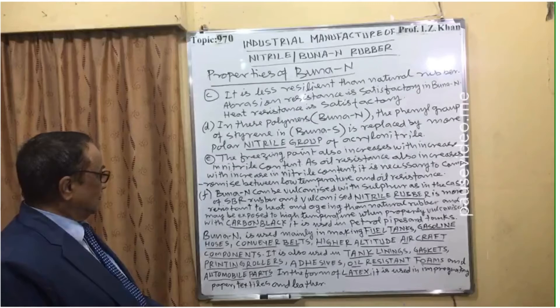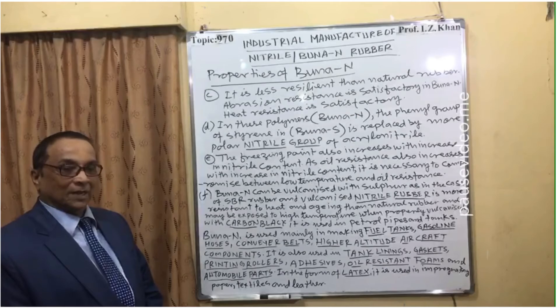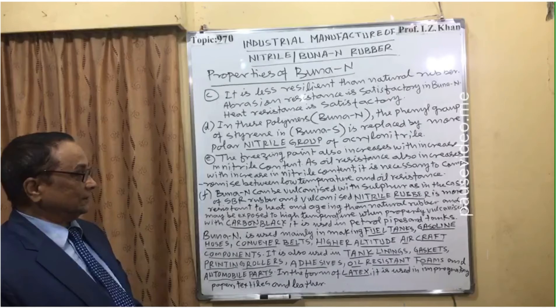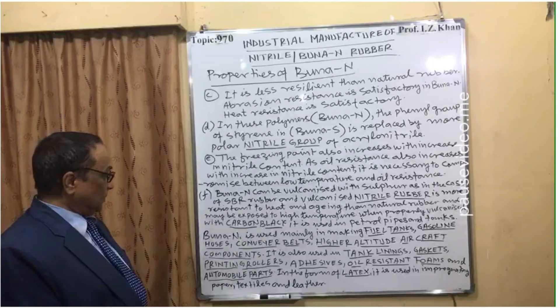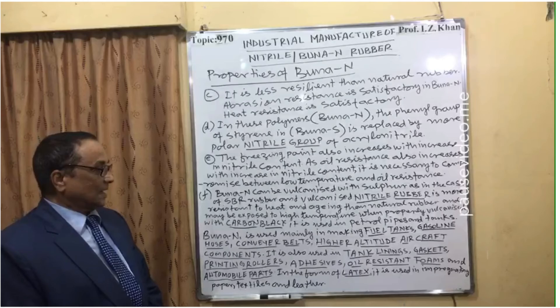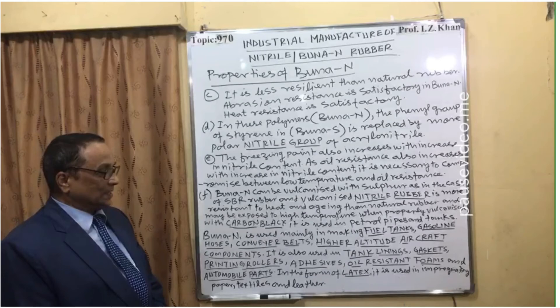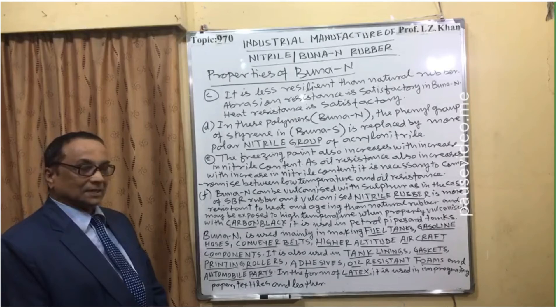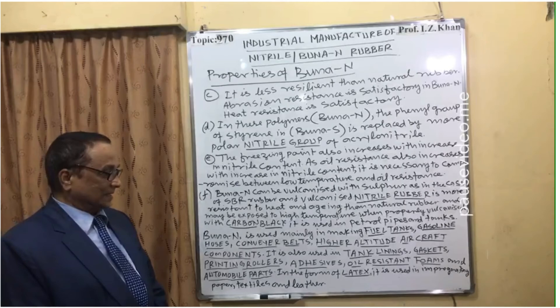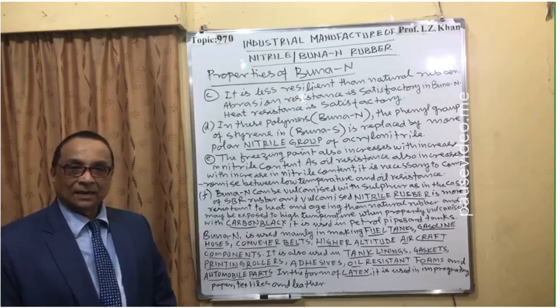When properly vulcanized with carbon black, Buna N is used in petrol pipes and tanks. Its main applications include fuel tanks, gasoline hoses, conveyor belts, high-altitude aircraft components, tank linings, gaskets, printing rollers, adhesives, oil-resistant foams, and automobile parts. In latex form, it is used for impregnating paper, textiles, and leather.